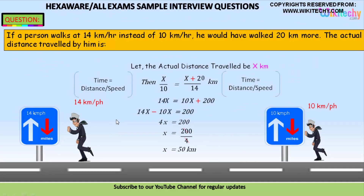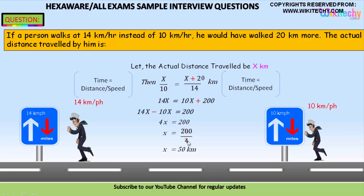Let's see the answer. As you know, the formula is: time = distance / speed. So this guy's time is distance divided by 10, which equals the distance plus 20 divided by 14. Since both times are equal, cross-multiplying gives 14x = 10x + 200. Bringing 10x to the left: 4x = 200, so x = 200 / 4.